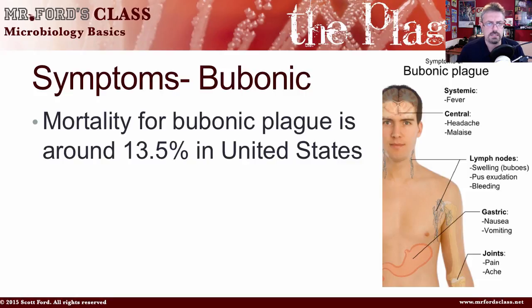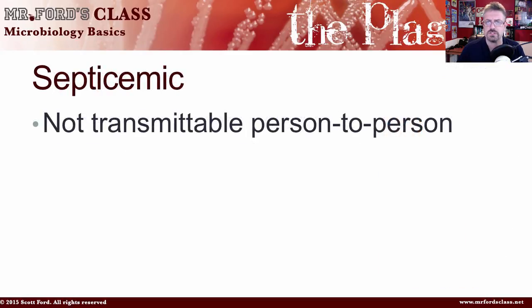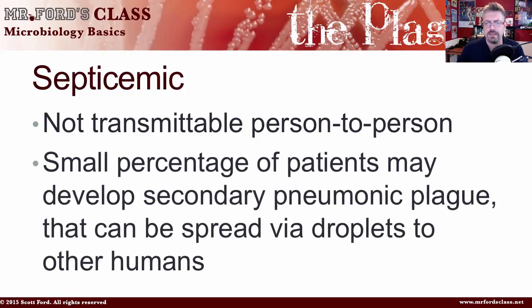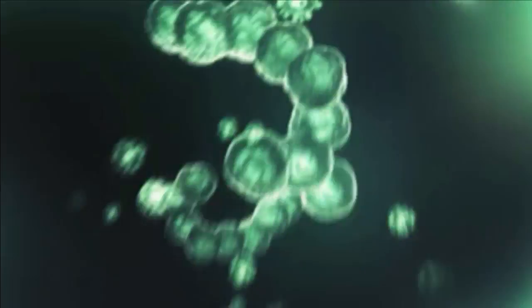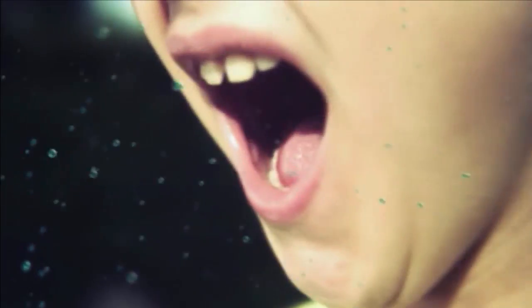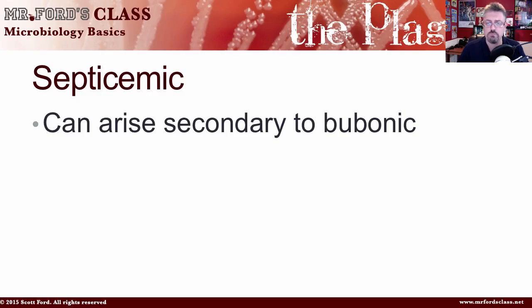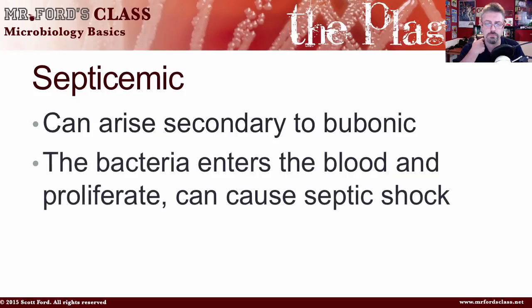The next variation is septicemic plague. This is not transmittable from person to person, which is a good thing. A small percentage of patients may develop secondary pneumonic plague, which is bad, as it can be spread via droplets to other humans — droplets being the small bits of spit released when you cough or sneeze. Septicemic plague can arise secondary to bubonic plague, as the bacteria enter the blood, proliferate, and can cause septic shock.